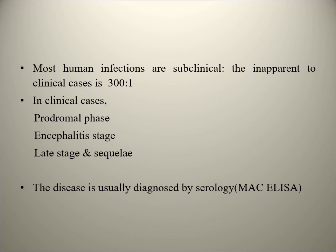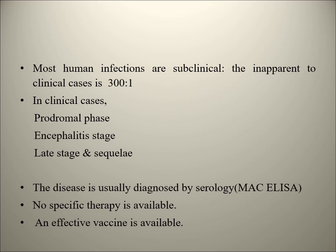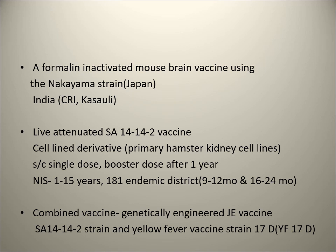Diagnosis is mainly by MAC-ELISA serology. There is no specific therapy - only symptomatic treatment. An effective vaccine is available and has been introduced into the National Immunization Schedule for endemic areas. The formerly used vaccine was a formalin-inactivated vaccine prepared from mouse brain using the Nakayama strain, made in India at the Central Research Institute, Kasauli.